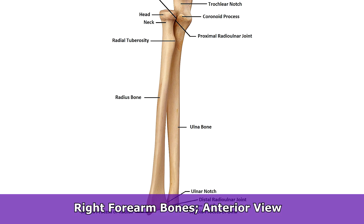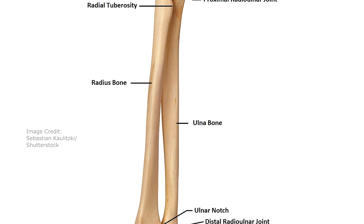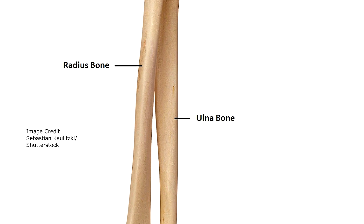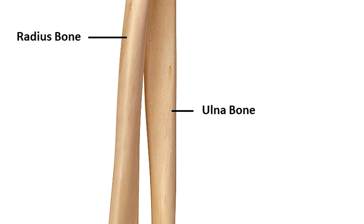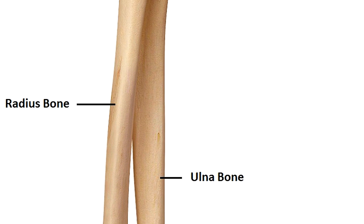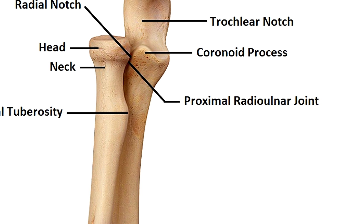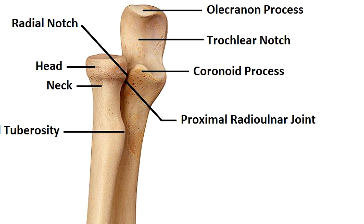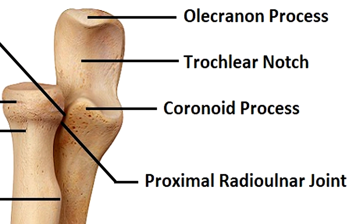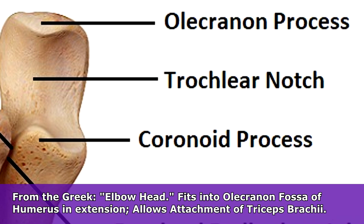Looking at the right forearm bones from the anterior or front view, let's examine the ulna first — in Latin, ulna means elbow. You'll see some of the same names as when we looked at the humerus because some of these parts actually fit together. The olecranon process — from a Greek word meaning elbow head — is a bony prominence that forms the elbow at the proximal end of the ulna and allows for the attachment of the triceps brachii muscle.